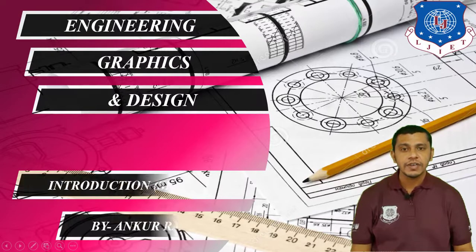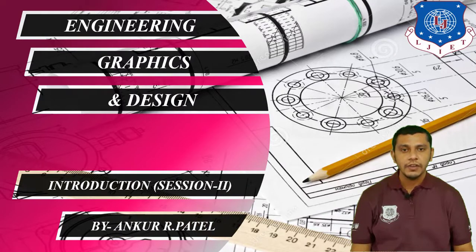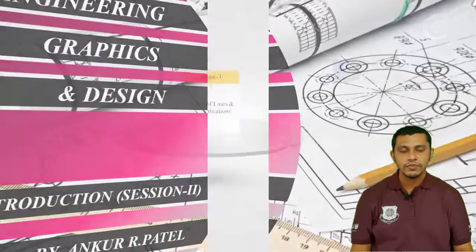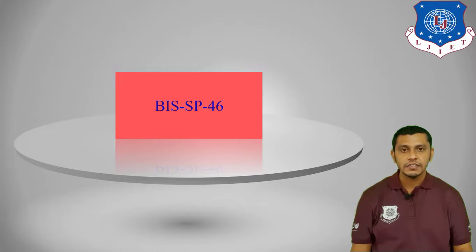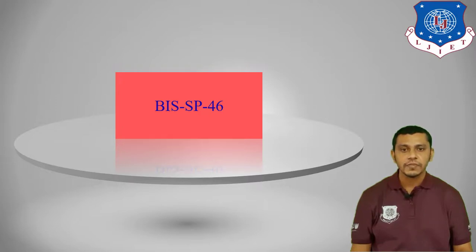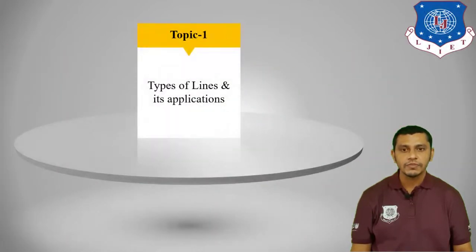Hello everyone, welcome to the lecture series of engineering graphics and design. I'm Ankur Patel, and today in the second session of introduction we are going to learn about two very important topics: first is types of lines and their application, and second is systems of dimensioning. Before starting, I would like to explain BIS SP 46 — Bureau of Indian Standards, where SP means Special Principles and 46 is the code. Under this code, the BIS has defined specific principles regarding drawing — dimensioning, lettering, and application of lines. These are the drawing standards we must apply in each and every drawing.